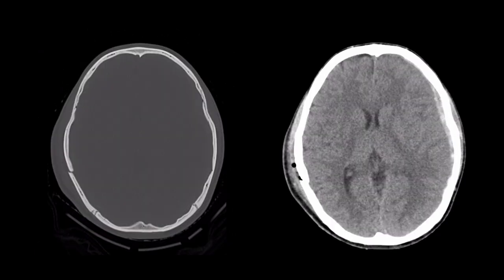You should direct your search on the images where there is evidence of soft tissue swelling overlying the skull. In this case, the soft tissue swelling will lead your eye to the fracture. Then direct your gaze to the other side of the brain, since contusions and subdural hematomas are almost always on the opposite side from the impact.